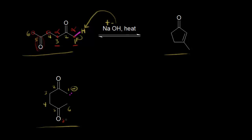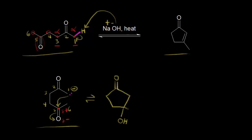We know this carbonyl has a partial negative oxygen and a partial positive carbon, so this carbon is electrophilic. Our nucleophile is going to attack our electrophile — these electrons are going to attack here, pushing these electrons off onto our oxygen. We would actually form our ring: a five-membered ring with our carbonyl, and we would form an alkoxide. Then we could think about protonating to form our aldol, and we would have a methyl group right here.